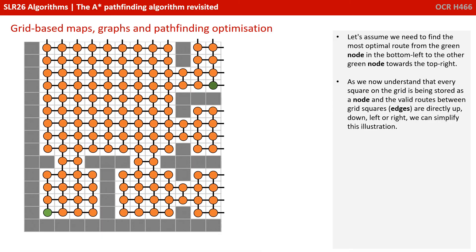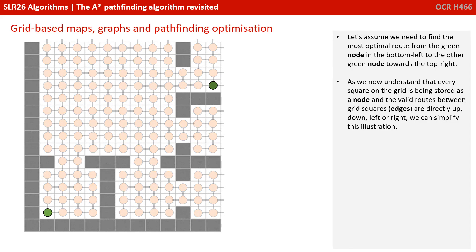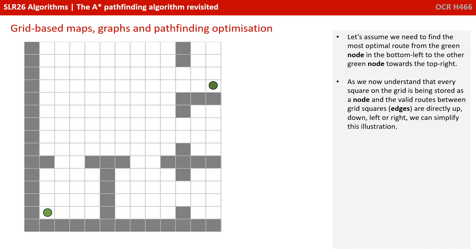Let's assume we need to find the most optimal route from the green node in the bottom left to the other green node towards the top right. As we now understand that every square on the grid is being stored as a node, and the valid routes between the grids or squares of the edges are directly up, down, left or right, we can simplify the illustration.